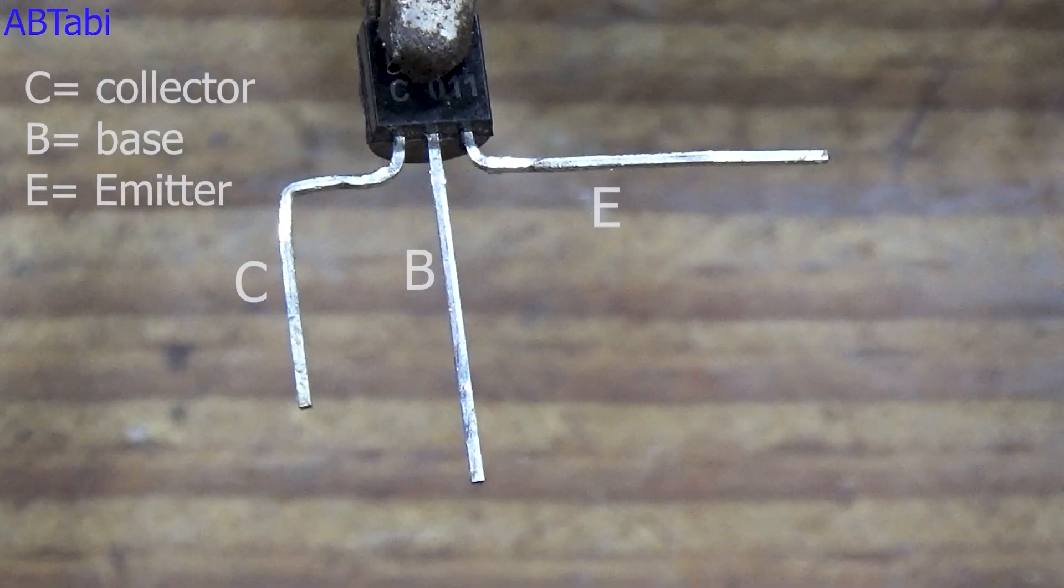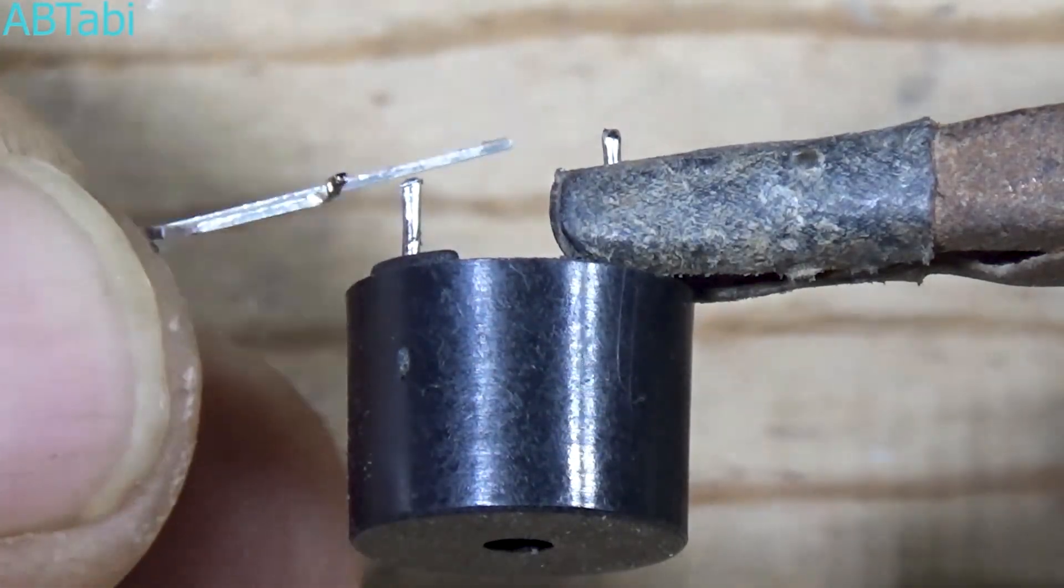Before making this circuit, let's understand the BC547 transistor pin configuration. When the flat side of the transistor is facing you, the left pin is the collector, the middle pin is the base, and the right pin is the emitter. This step is very important, so make sure you identify the pins correctly.